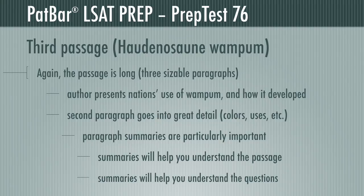This passage comprises 62 lines of text in three sizable paragraphs. The author introduces us to the Haudenosaunee group of nations of Northeastern North America and the beads they used as wampum and how. The second paragraph goes into laborious detail about the type, colors, and uses of wampum. Once again, paragraph summaries will be very useful for those of us without instant recall.